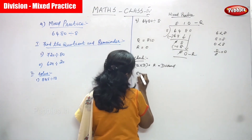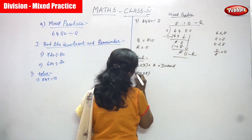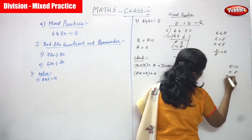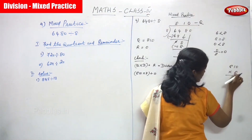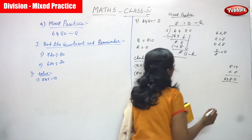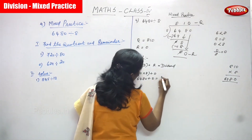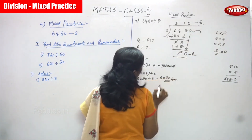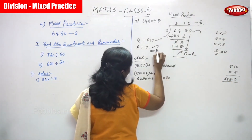Quotient is 810. 810 multiplied by divisor 8, then add with remainder 0. So 810 into 8: 8 ones are 8, 1 eight is 8, 8 eights are 64. The answer is 6480. Add with 0, you can get 6480. This is the question — you can get the question back, so your answer is exactly right.